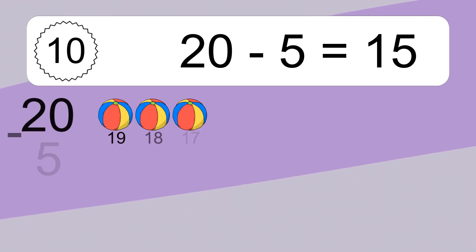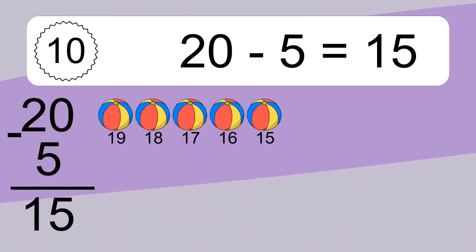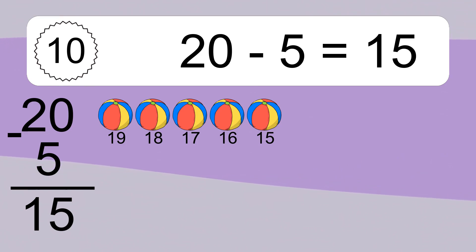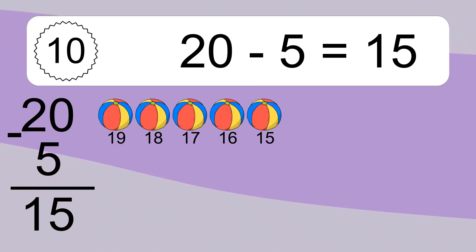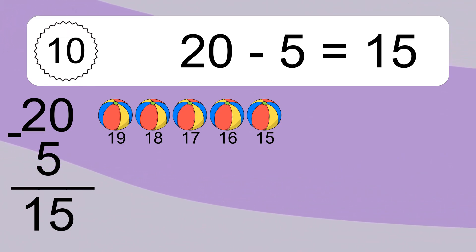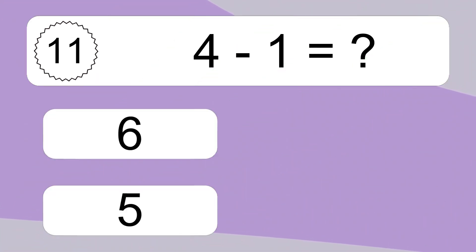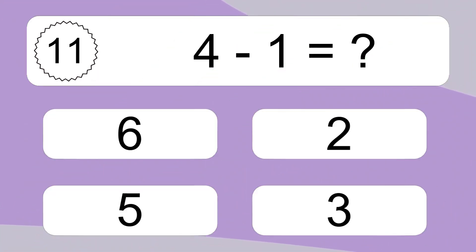20 minus 5 equals what? 20 minus 5 equals 15. Let's count it: 19, 18, 17, 16, 15.